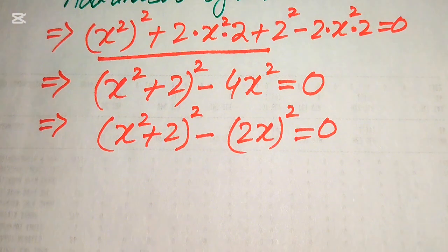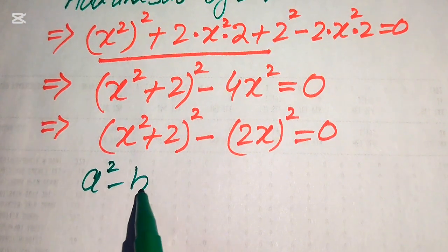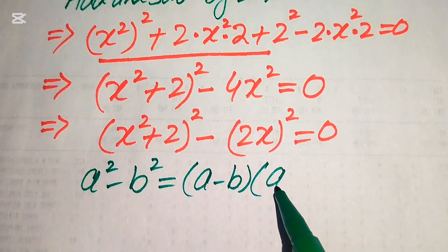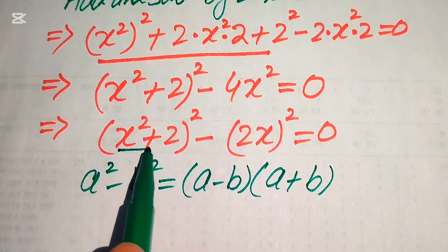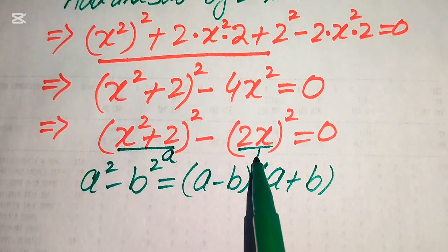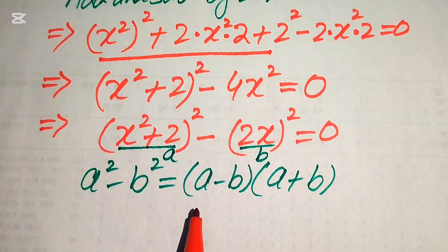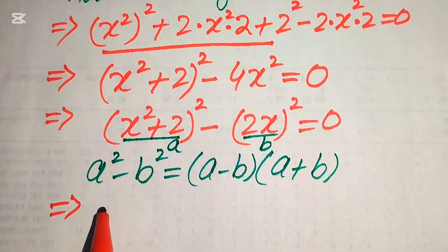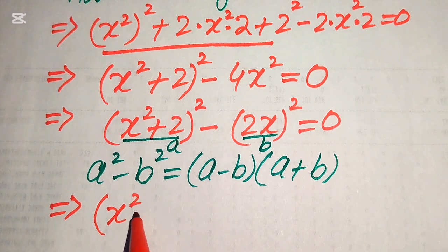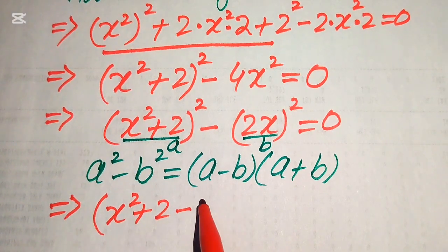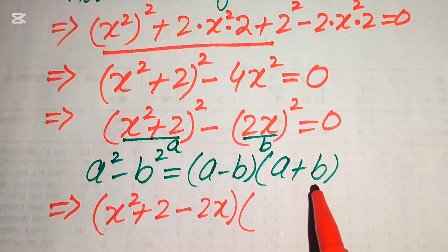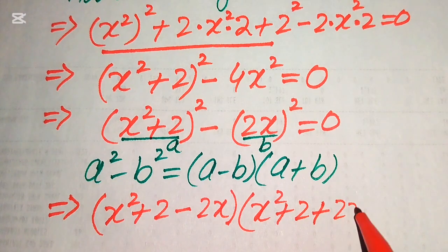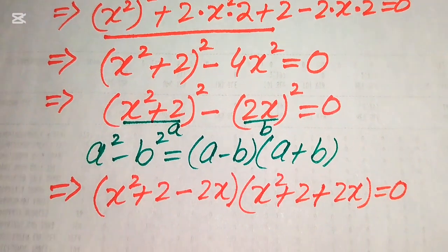We apply the algebraic formula a² minus b² equals (a minus b)(a plus b). The base of the first term is our a and the base of the second term is our b. Using this formula, our equation becomes (x² + 2 minus 2x)(x² + 2 + 2x) equals 0.